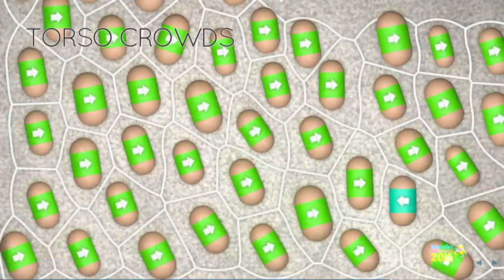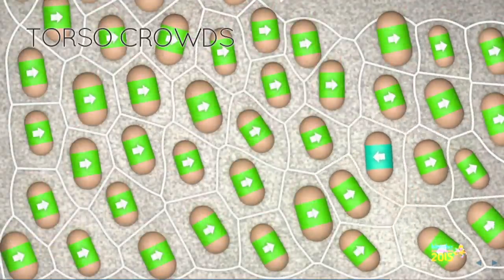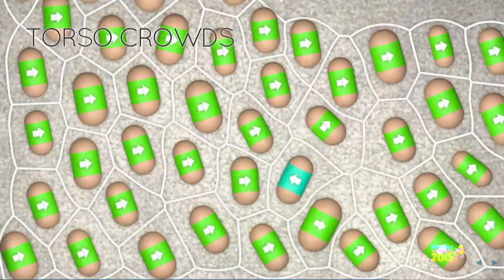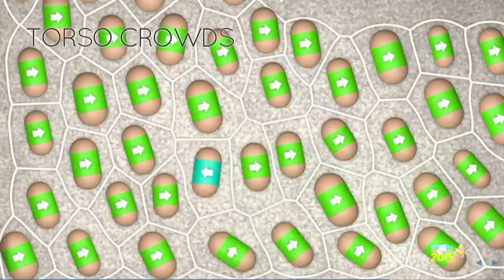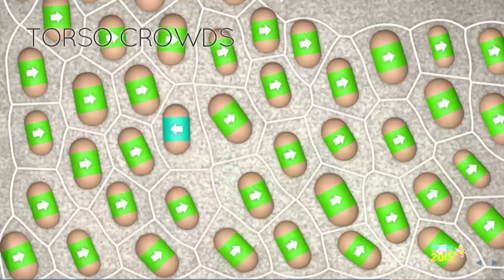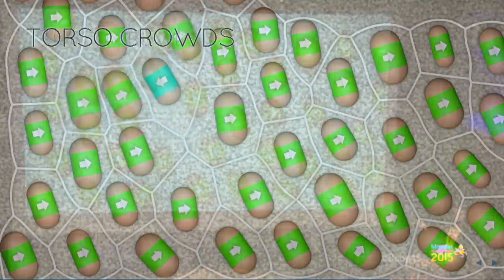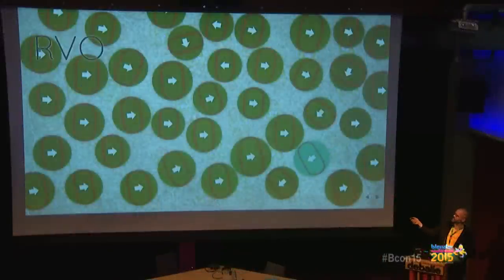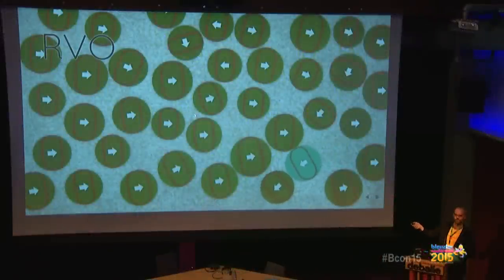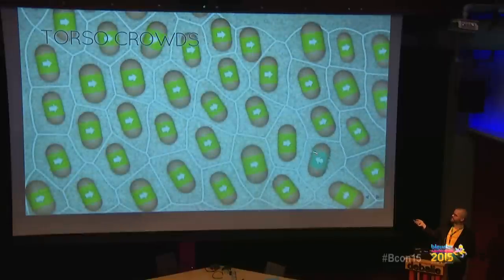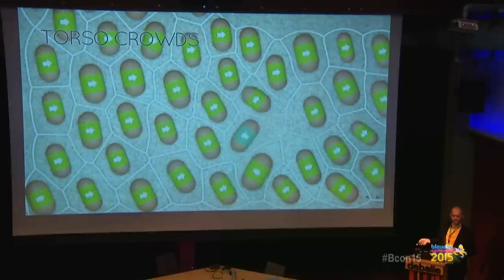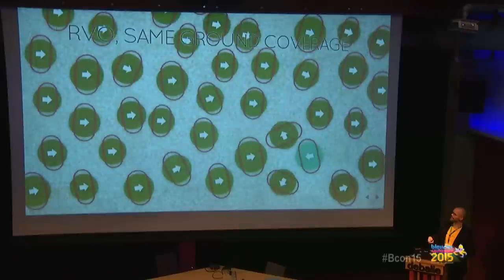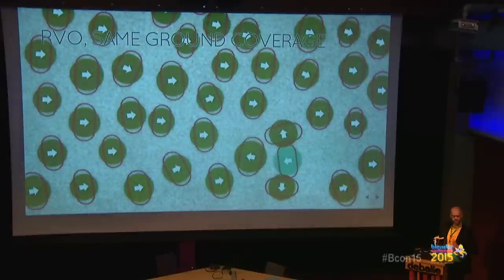We wanted to make it easier for RVO by giving it the same surface area as our capsule rather than making the cylinder large enough to fit the entire capsule.